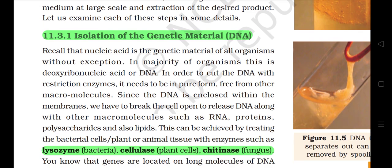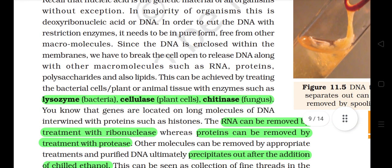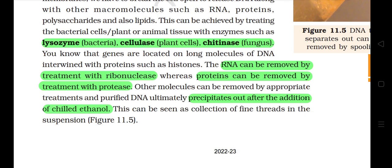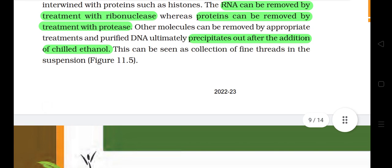11.3.1 Isolation of the Genetic Material. Nucleic acid is the genetic material of all organisms without exception. In the majority of organisms, this is deoxyribonucleic acid or DNA. In order to cut the DNA with restriction enzymes, it needs to be in pure form, free from other macromolecules. Since the DNA is enclosed within the membranes, we have to break the cell open to release DNA along with other macromolecules such as RNA, proteins, polysaccharides, and also lipids. This can be achieved by treating the bacterial cells, plant, or animal tissues with enzymes such as lysozyme (for bacteria), cellulase (for plant cells), and chitinase (for fungi). The RNA can be removed by treatment with ribonuclease whereas proteins can be removed by treatment with protease. Other molecules can be removed by appropriate treatments, and purified DNA ultimately precipitates out after the addition of chilled ethanol, and can be seen as a collection of fine threads in the suspension.